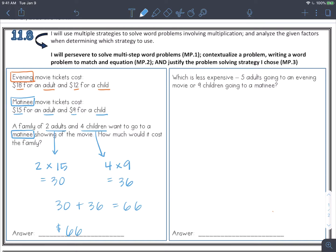The next question says which is less expensive? Five adults going to an evening movie or nine children going to a matinee? So again you can use colored pencils or highlighters and then let's calculate these separately. Then we can compare. Five adults going to an evening movie would be five times 18. I can break that down into smaller factors to make it easier to solve and then find friendly products.